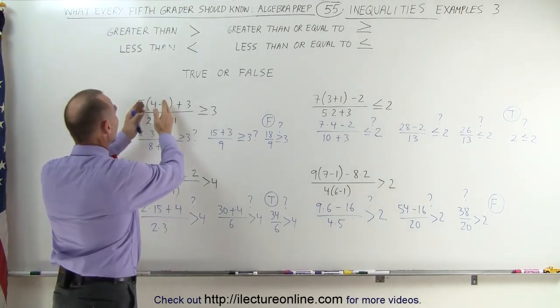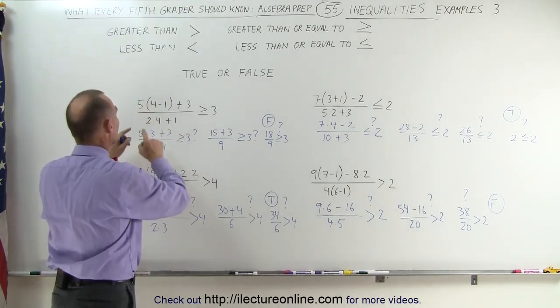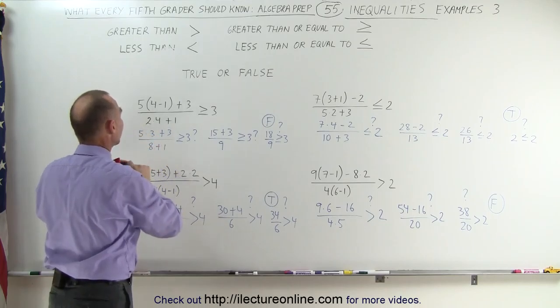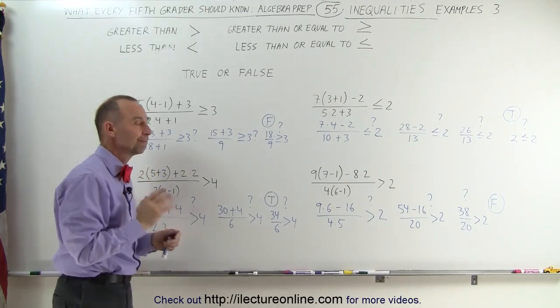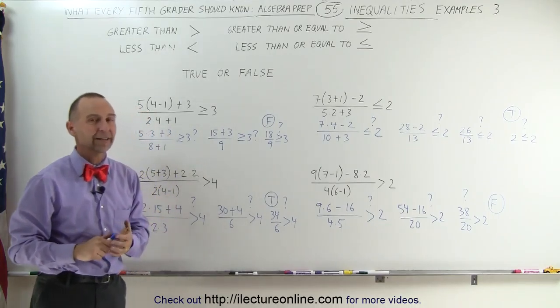Work out what's in the parentheses first, then multiply before we add and subtract. And that's how it's done.